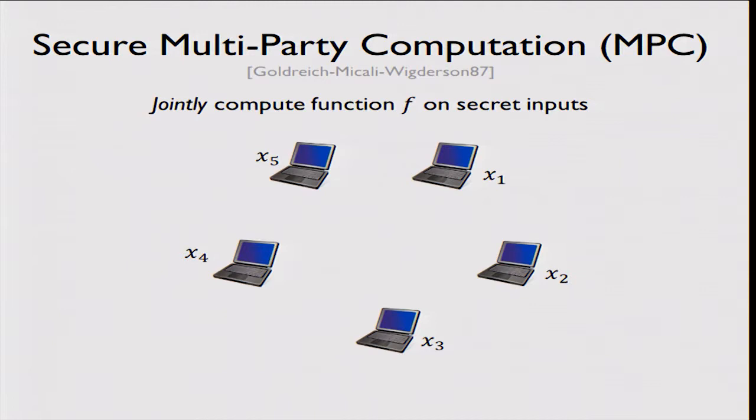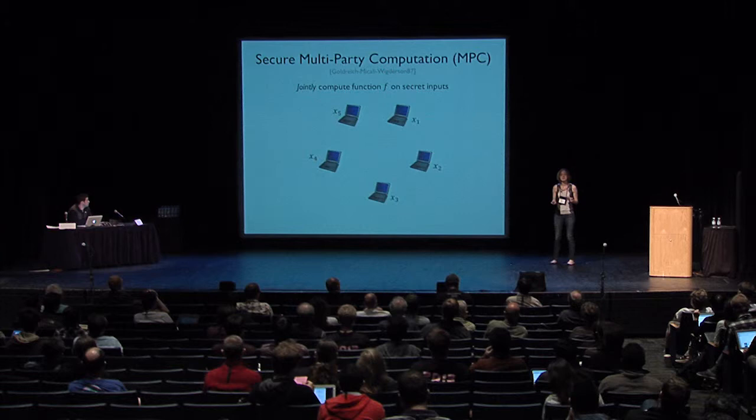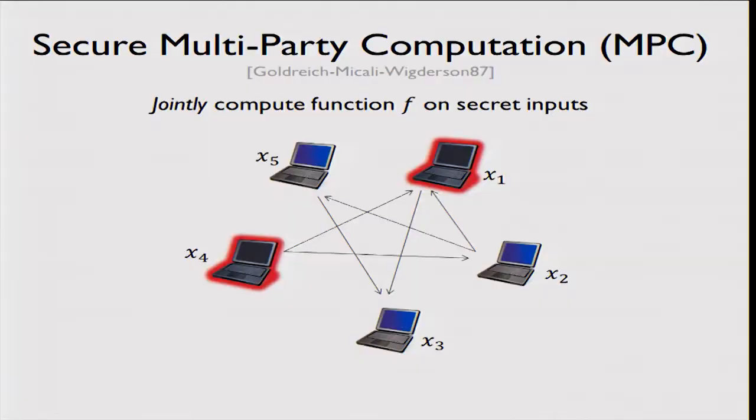The subject of this work is secure multi-party computation. We have a collection of parties, each with some secret input x_i, and these parties want to compute some function F on these inputs. A secure MPC protocol allows the parties to communicate such that at the end, everybody learns F evaluated on the inputs and nothing else about the inputs — and this holds even if some fraction of the parties have been corrupted.